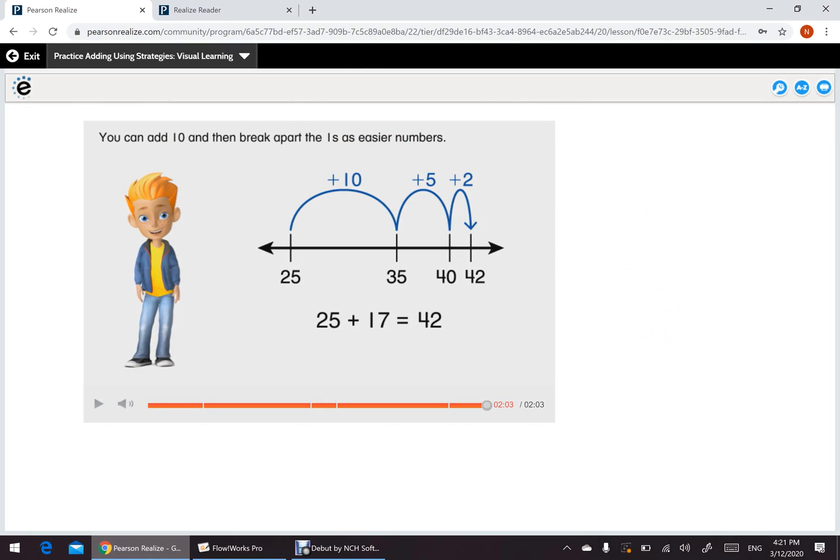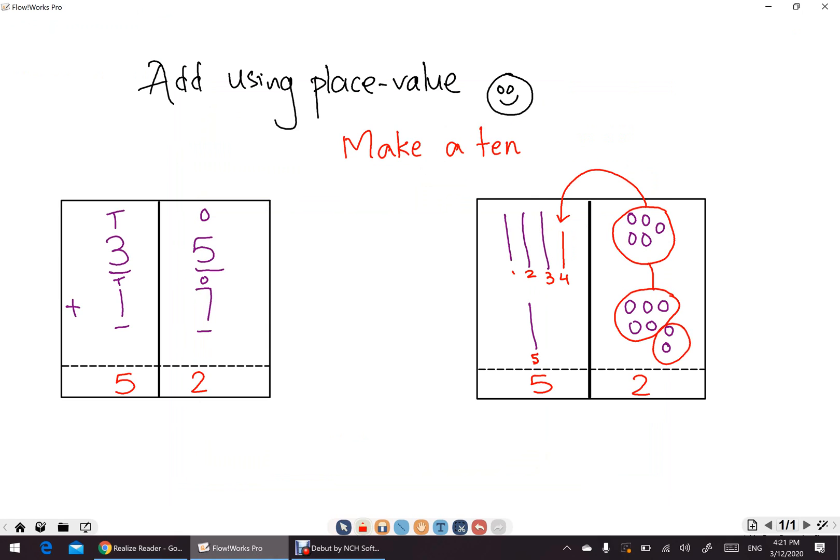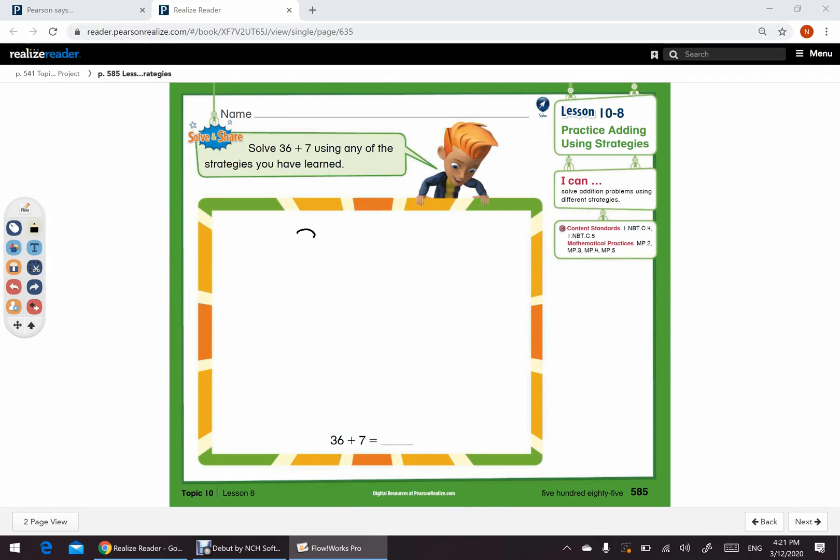So, now it's easy for you to solve the questions. Now you can use any one of the strategies to solve your two-digit addition problems. Now, here, let's take 36 plus 7. Solve 36 plus 7 using any of the strategies you have learned. So, we have 36 plus 7. We know that 6 is in 1's place and 3 is in 10's place. And 7 is a single-digit number, so it's in 1's.